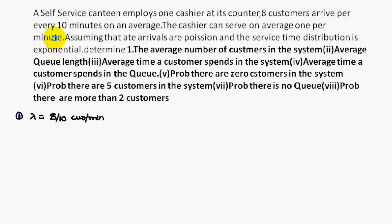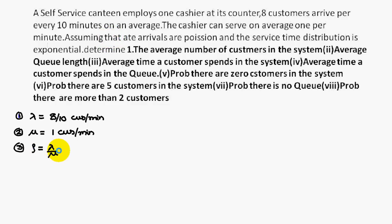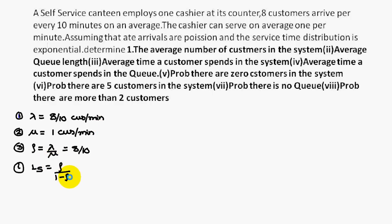Rho equals lambda by mu, which is (8/10) divided by 1, so rho equals 8/10. The first question asks for the average number of customers in the system, which is Ls equals rho divided by (1 minus rho) — that is (8/10) divided by (1 minus 8/10). Simplifying gives Ls equal to 4.